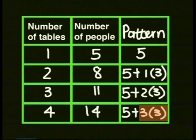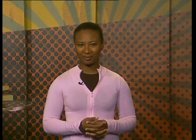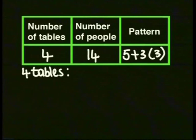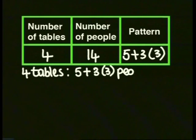What do you think we could write for the first table that would fit this pattern? We have three times three, two times three, and one times three — so the next one should be zero times three. You are absolutely right. It seems you are a numbers person, Gerard. Now let's describe what is happening in this pattern. The number of people at four tables will be five plus three times three. For each pattern, the five stays part of the pattern. Then we take a number one less than the number of tables — three is one less than four — and we multiply by three. That gives us the number of people.